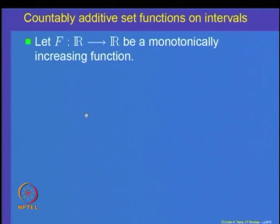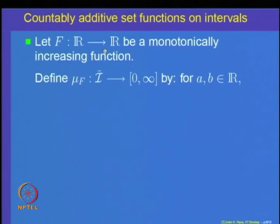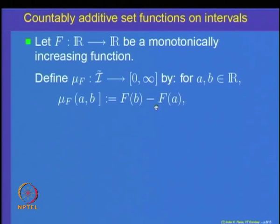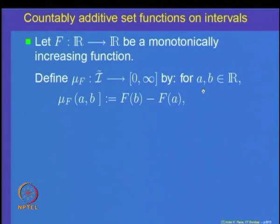The converse part of the theorem says: let f be a monotonically increasing function from R to R. Define mu_f on the class of all left open right closed intervals as follows: for any real numbers a and b, mu_f of the left open right closed interval (a,b] is defined as f(b) minus f(a).